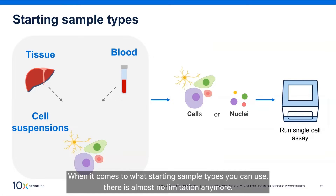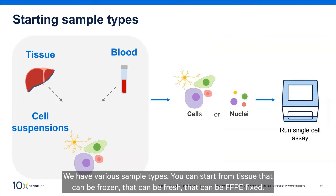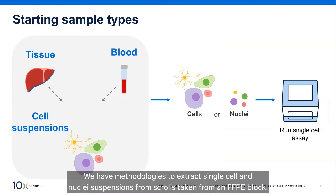When it comes to starting sample types, there is almost no limitation anymore. We have various sample types you can start from — tissue that can be frozen, fresh, or FFPE fixed. We have methodologies to extract single cell and nuclei suspensions from scrolls taken from an FFPE block.